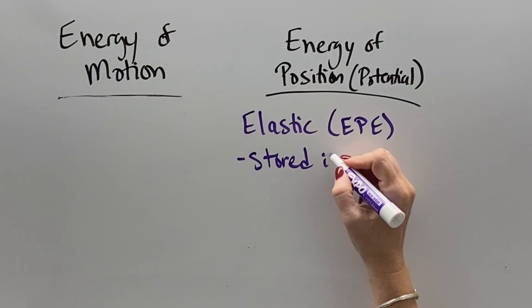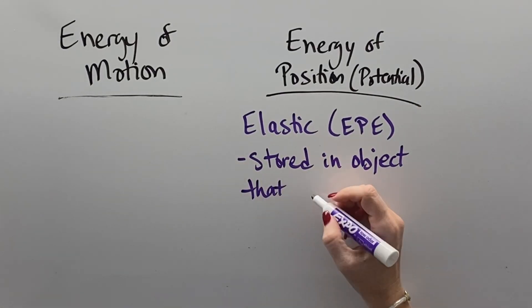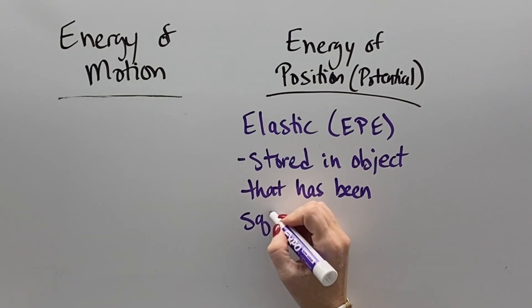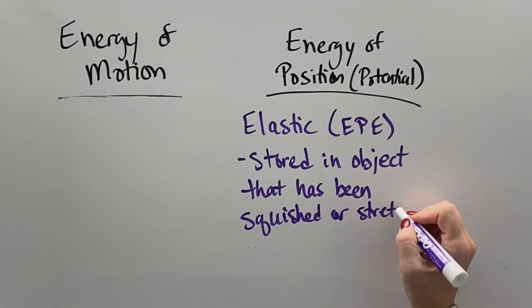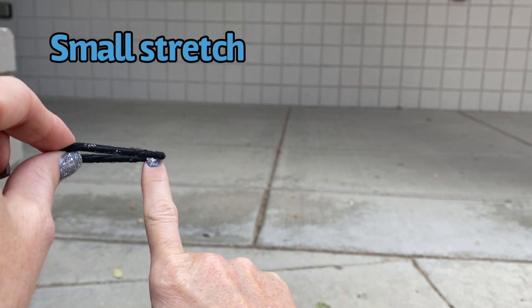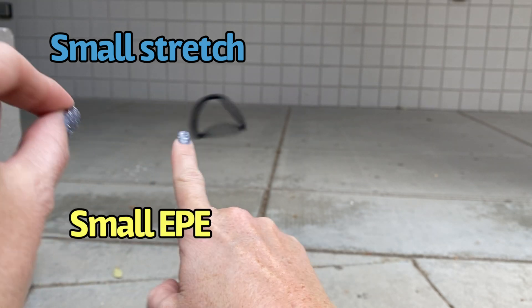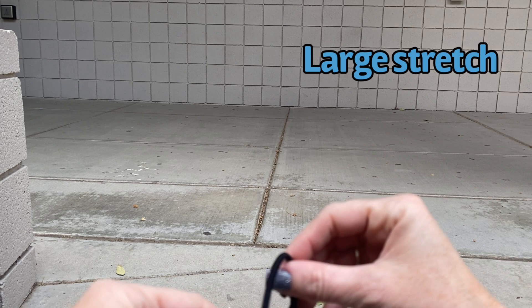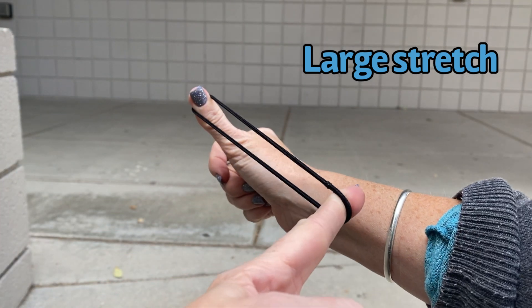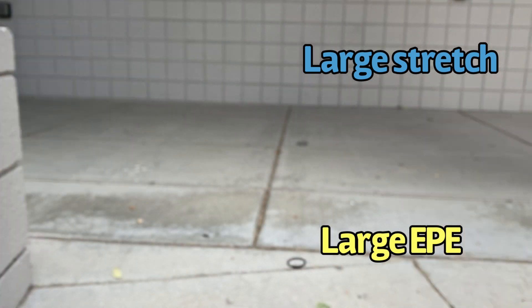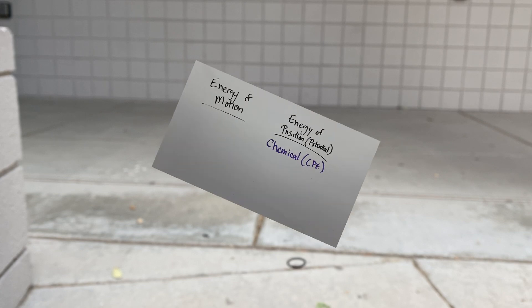Elastic potential energy is stored energy when an object is misshapen, when it's stretched or bent or squished. The more something is stretched, so a low stretch gives you a little bit of stored elastic potential, and if you stretch something more or squish something more, then it will have more stored energy that could result in a greater transfer of energy.